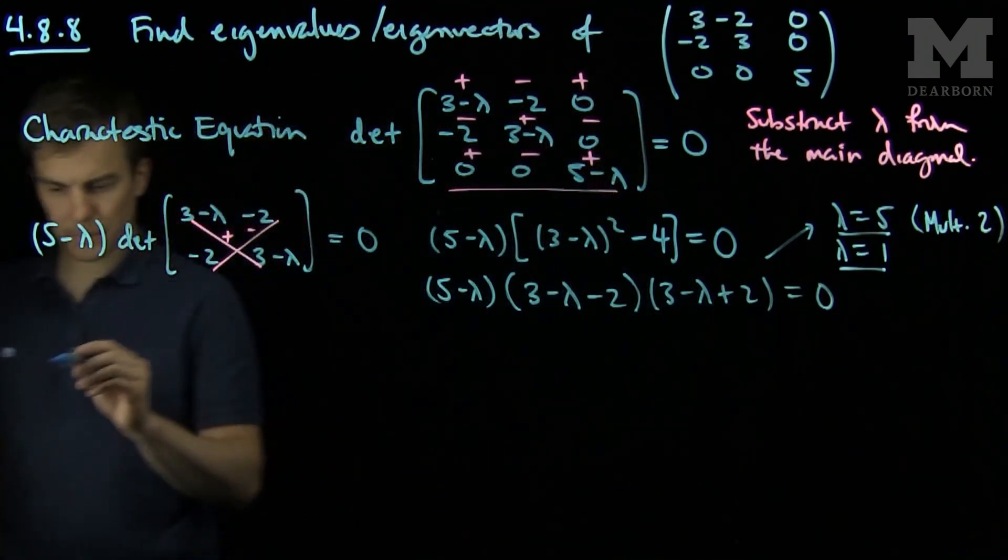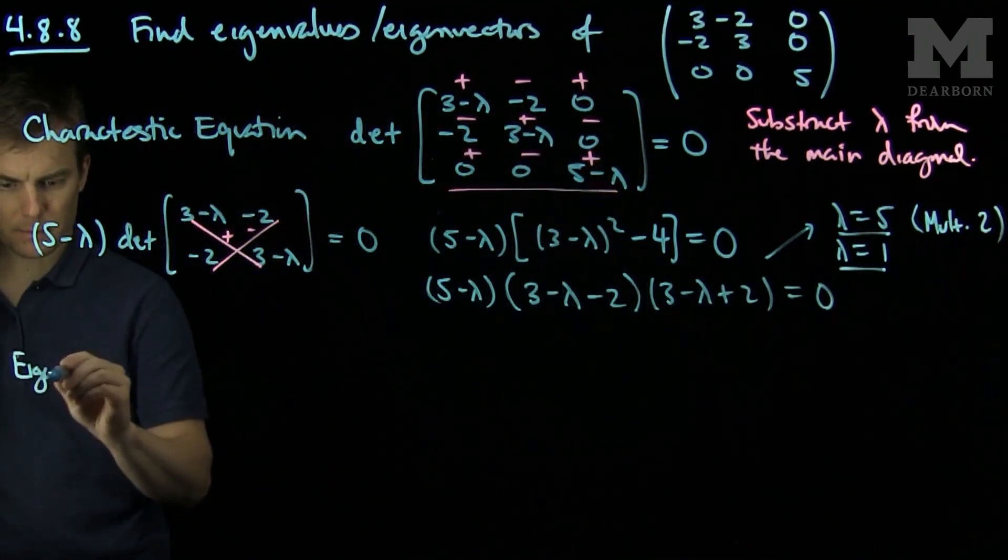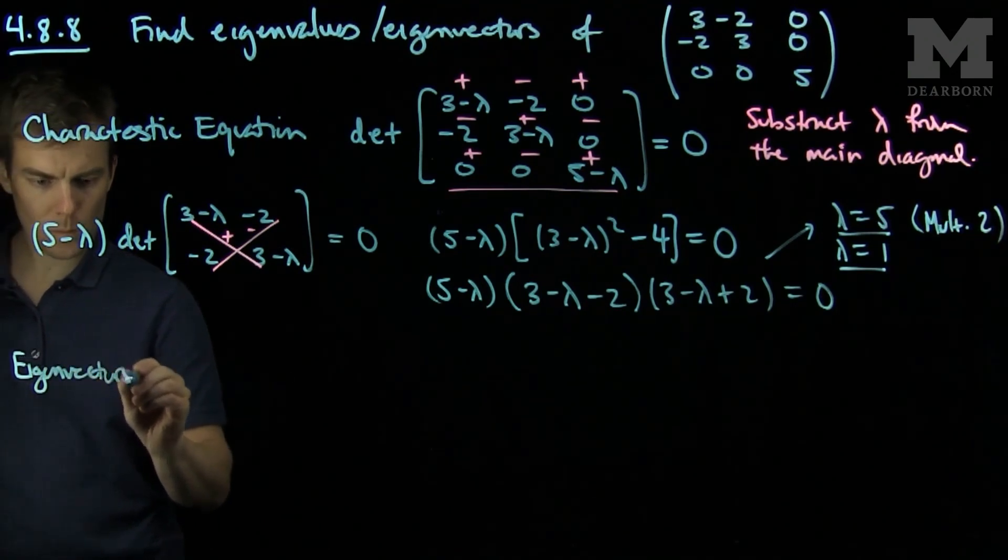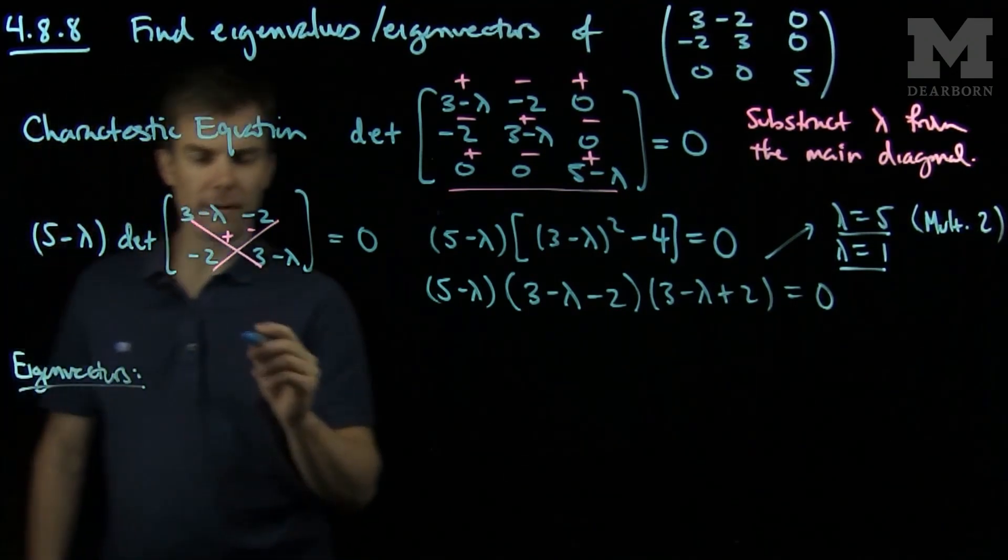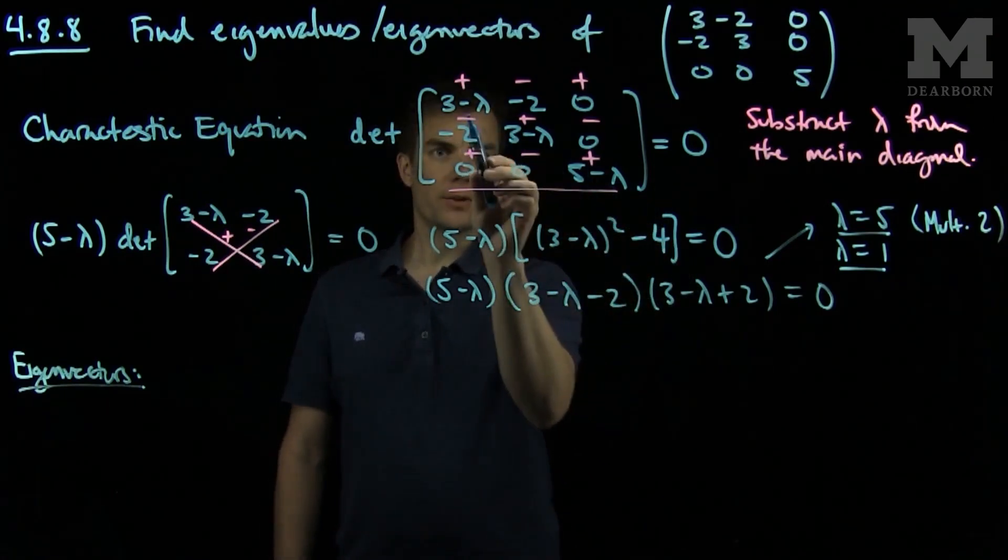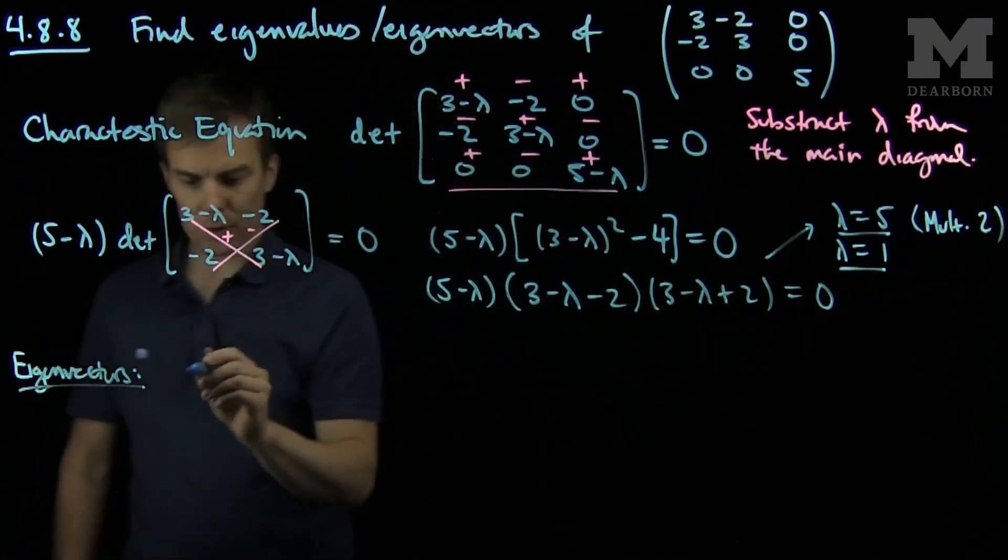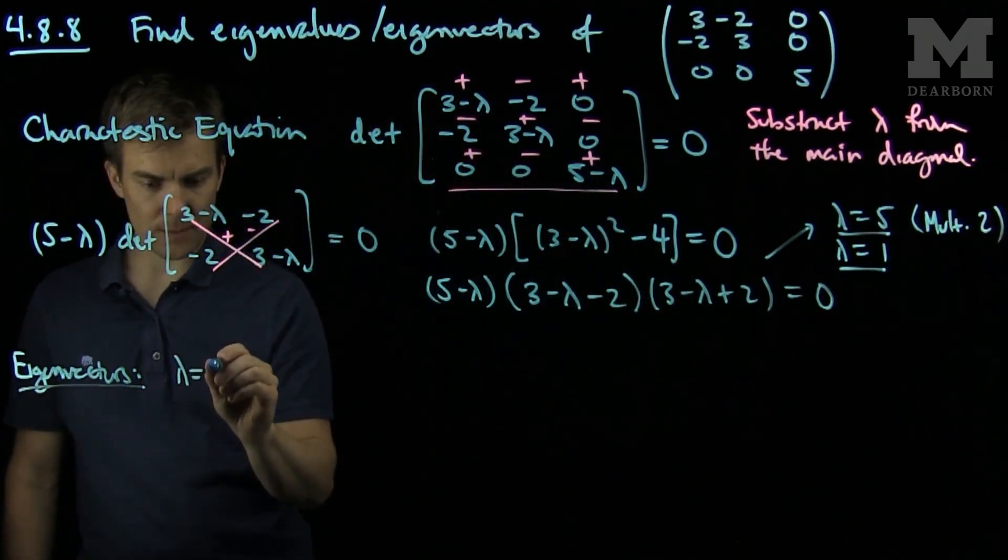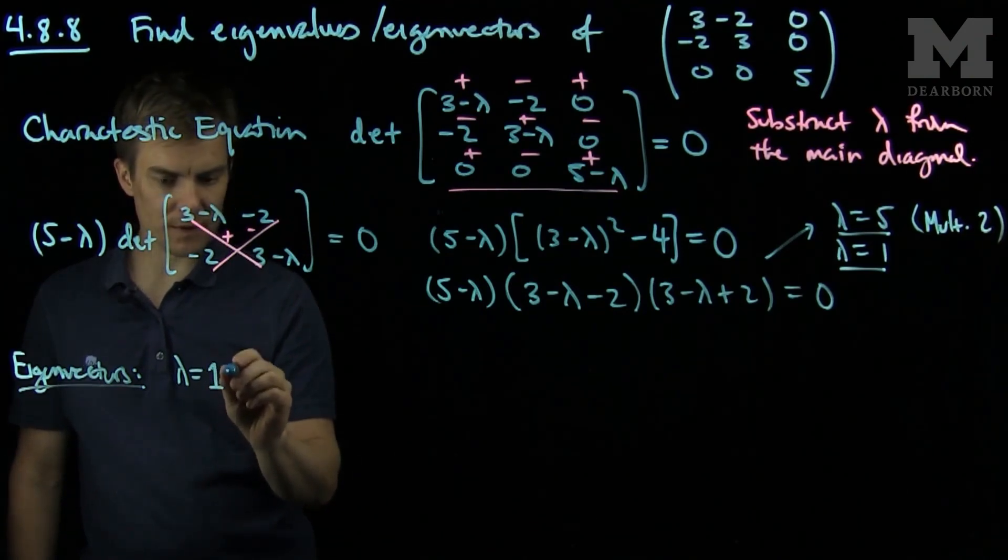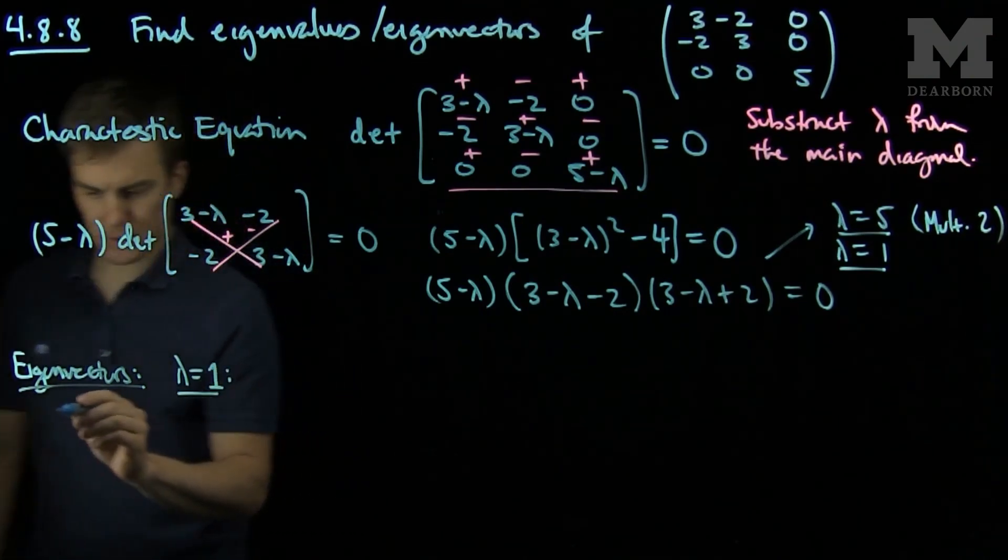Now, to find the eigenvectors, we find an element in the null space of the matrix I get when I plug in the eigenvalue. We'll take a look at the case when lambda equals 1 first.